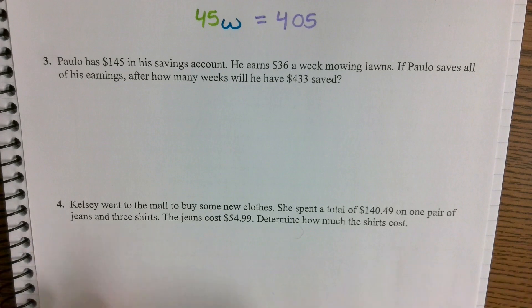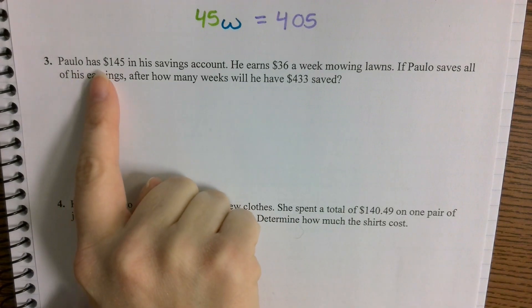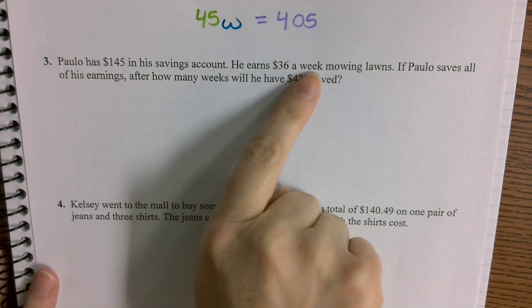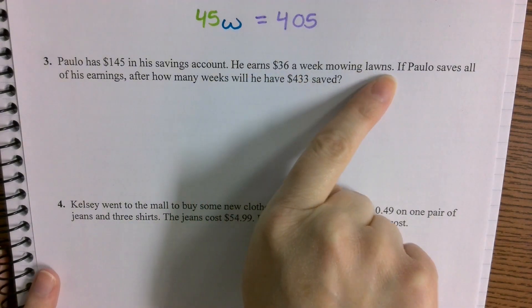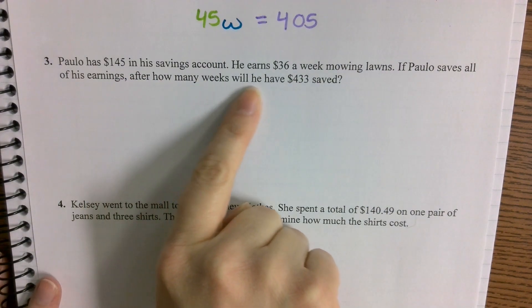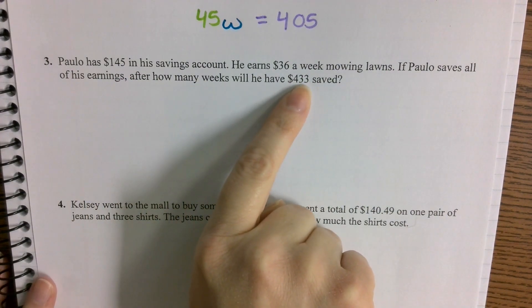Let's go ahead and go down to problem three. Problem three says, Paolo has $145 in his savings account. He earns $36 a week mowing lawns. If Paolo saves all of his earnings, how many weeks will he have $433 saved?